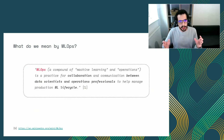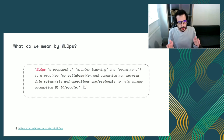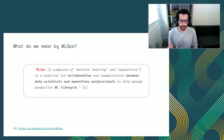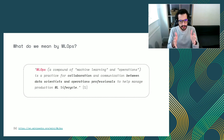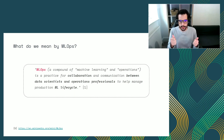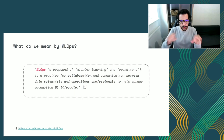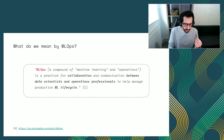So where does MLOps fit in this entire lifecycle? I took this definition from Wikipedia — MLOps, compounded from machine learning and operations, is a practice for collaboration and communication between data scientists and operations professionals to help manage the production ML lifecycle. From here we can see what things MLOps tries to solve, and also infer what makes MLOps hard.